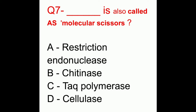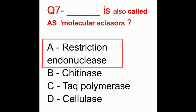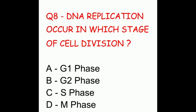Question seven: what is also called molecular scissors? The options are restriction endonuclease, chitinase, Taq polymerase, or cellulase. The correct answer is restriction endonuclease.